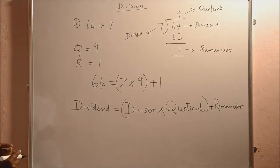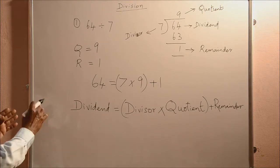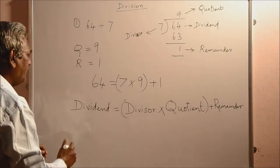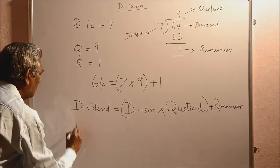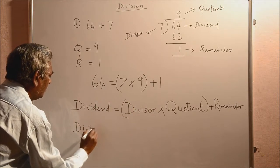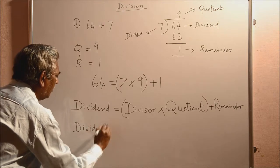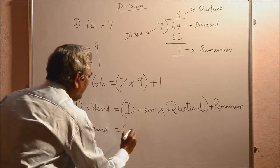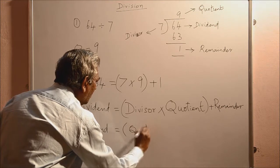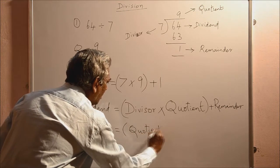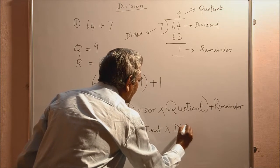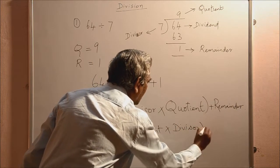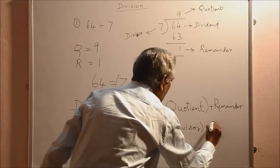The same thing can be written this way also. That is, in this divisor and quotient, you can write this way also. So, that is, dividend equal to quotient into divisor plus remainder.